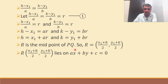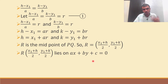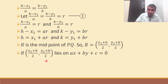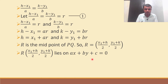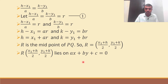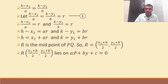This point R lies on this line, so in the equation x gets x1 plus h by 2 and y gets y1 plus k by 2. R lies on this straight line means coordinates of R will satisfy this equation.